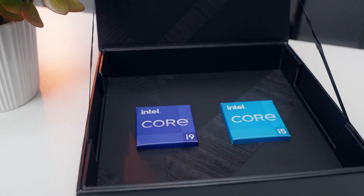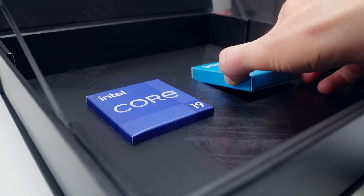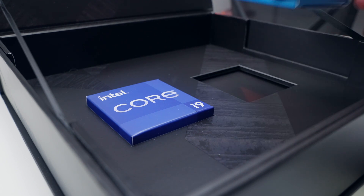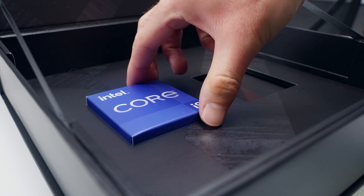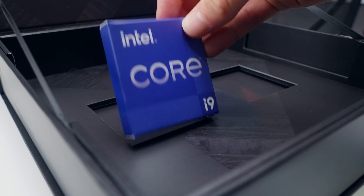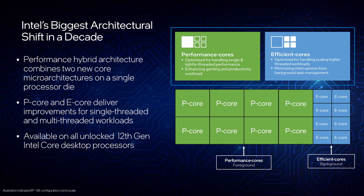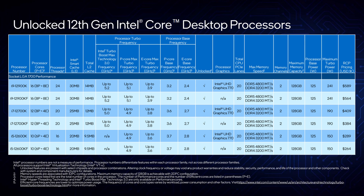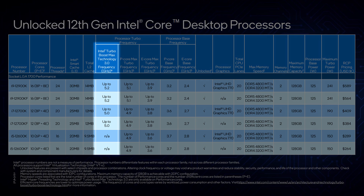An all-new hybrid architecture combines two different types of processing cores optimized for performance and efficiency, called P-Cores and E-Cores respectively. P-Cores are the fastest cores on the processor, optimized to handle single and lightly threaded tasks like gaming. In fact, the max single-core turbo frequency is an insane 5.2 GHz.